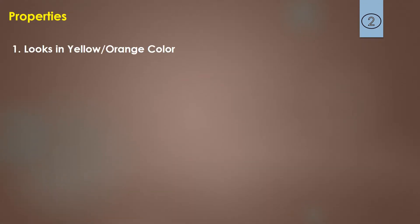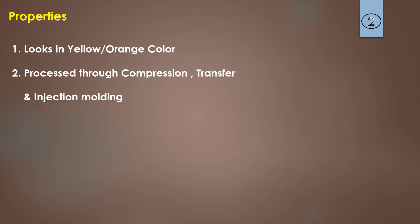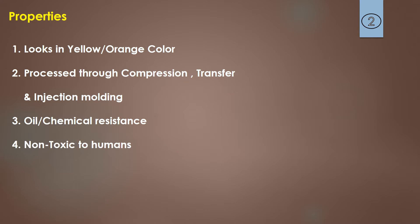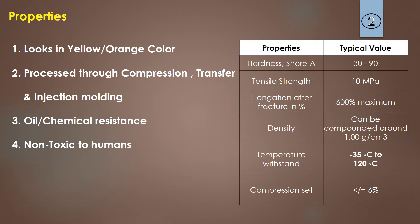NBR appears in yellow and orange color, and it can be processed through compression molding, transfer molding, and injection molding. It has the unique property of high oil and chemical resistance and is non-toxic to humans. Key properties include: Shore A hardness ranging from 30 to 90, tensile strength of 10 MPa, elongation after fracture up to 600%, and density of 1 gram per centimeter cube.